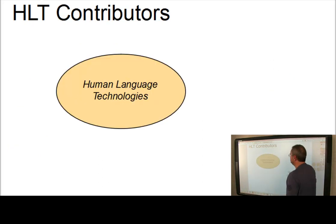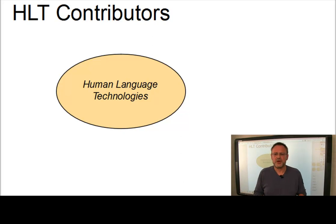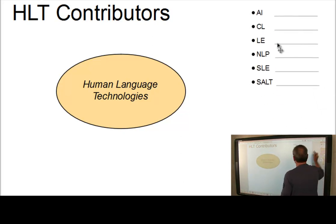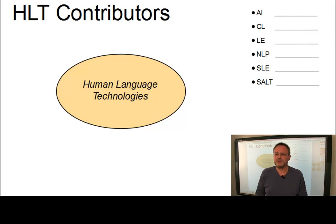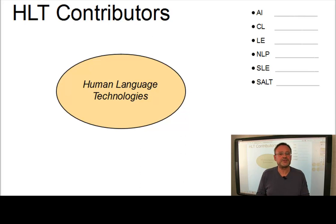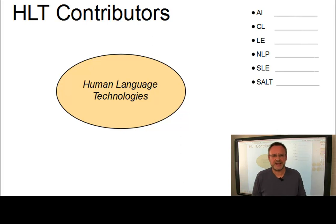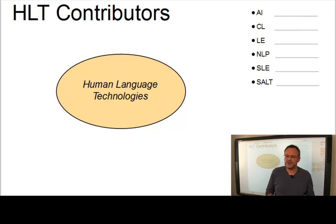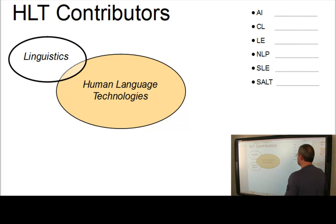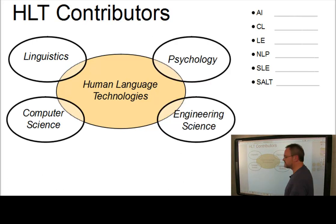Let's now look at the contributors to human language technologies. Research on computational models of language has many different names. Here is a list of frequently encountered labels: AI stands for Artificial Intelligence; CL stands for Computational Linguistics; LE stands for Language or Linguistic Engineering; NLP stands for Natural Language Processing; SLE stands for Speech and Language Engineering; and SALT stands for Speech and Language Technology. Furthermore, there is a wide range of related fields with the following main contributions: Linguistics, Computer Science, Psychology and Engineering Science.